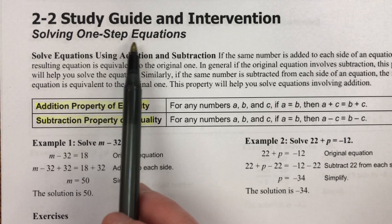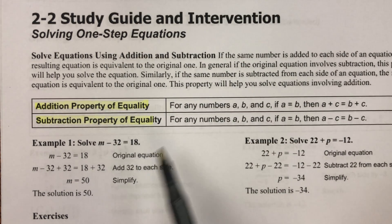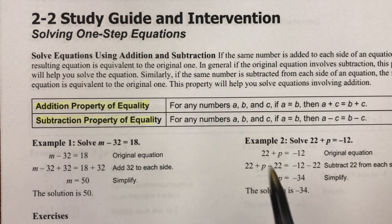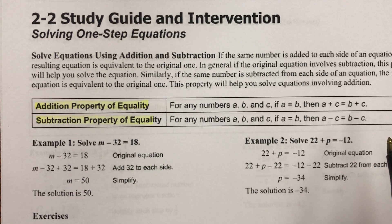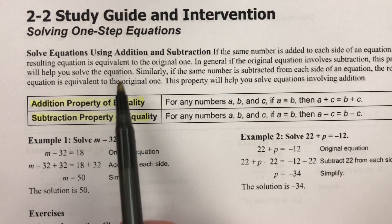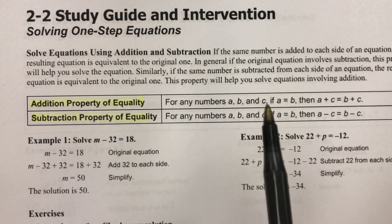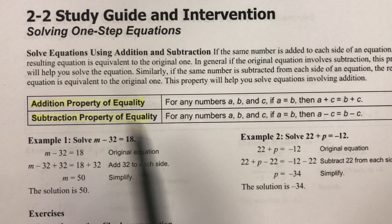Solving one step equations. A one step equation is when you only have to perform one operation to isolate a variable. In other words, to solve for x or whatever variable you're using, you only have to do one thing and then you get the variable by itself. So first we're going to do it with adding and subtracting, and then we're going to do it by multiplying and dividing.